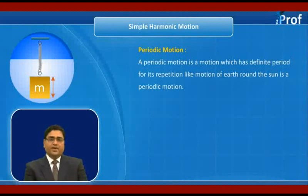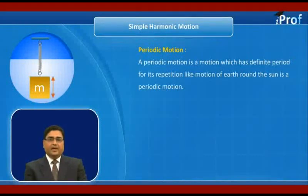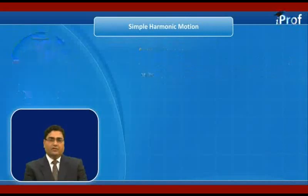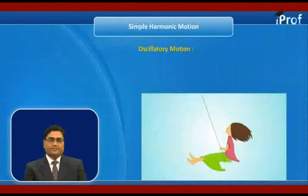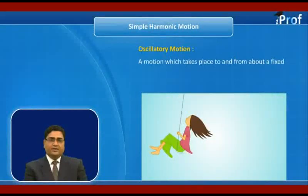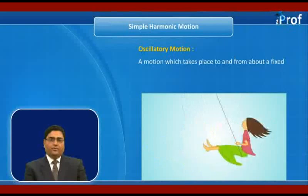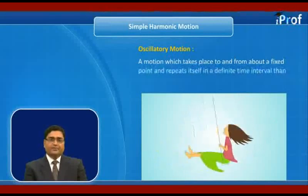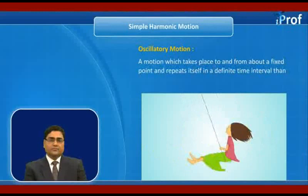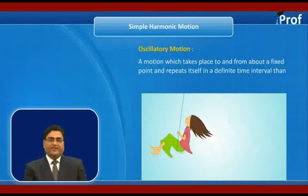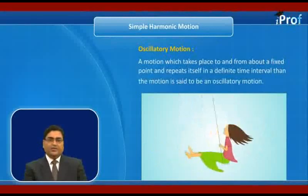The figure shows a spring-block system, escaping of a girl, and a simple pendulum as examples. Now, what is oscillatory motion? A motion which takes place to and fro about a fixed point and repeats itself in a definite time interval is said to be an oscillatory motion.